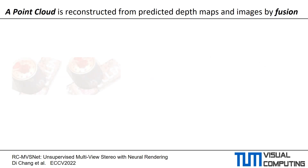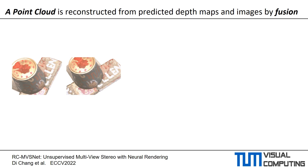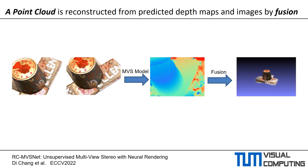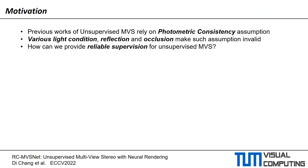Following the common setting of supervised and unsupervised multi-view stereo, we first predict a depth map for the reference view of an image input by a multi-view stereo model. Then, a point cloud is reconstructed from the predicted map and RGB images by fusion. However, previous works in unsupervised multi-view stereo rely heavily on the assumption that corresponding pixels from different views of a 3D point share the same photometric feature.